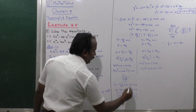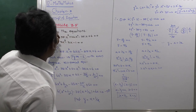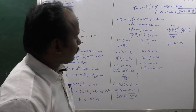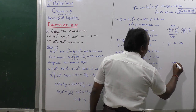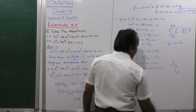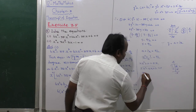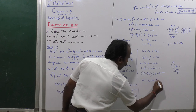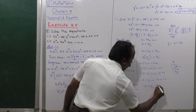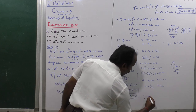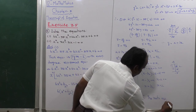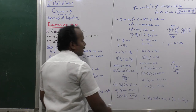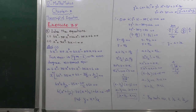Therefore the roots of the equation are: 3, 1/3, 2, and 1/2. That is our answer — very easy.